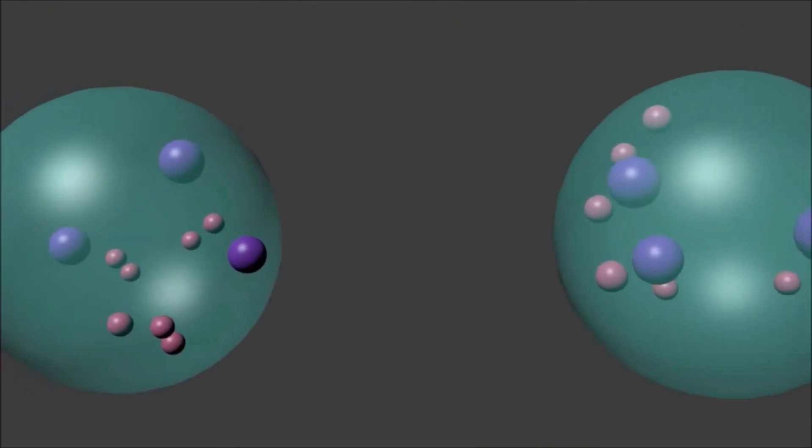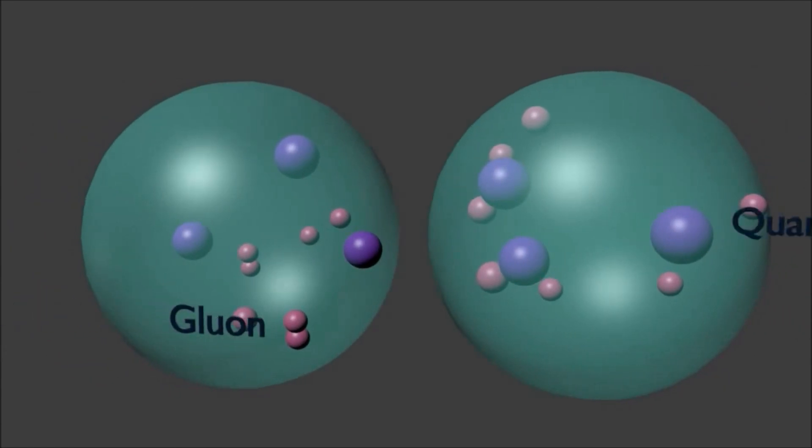Each proton consists of three quarks and number of gluons. Collision takes place and some byproducts along with energy are produced.